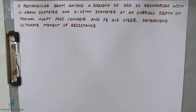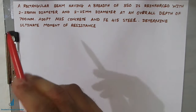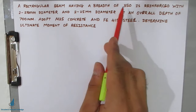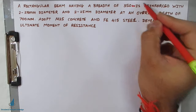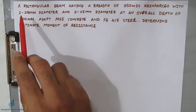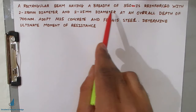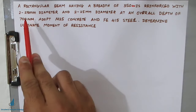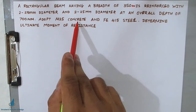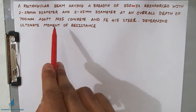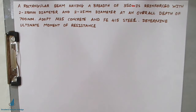The problem given is: a rectangular beam having a width of 350 mm is reinforced with two bars of 28 mm diameter and two bars of 25 mm diameter at an overall depth of 700 mm. You should adopt M25 concrete and Fe415 grade steel, and determine the ultimate moment of resistance. These types of problems are the first type in the analysis of beams.